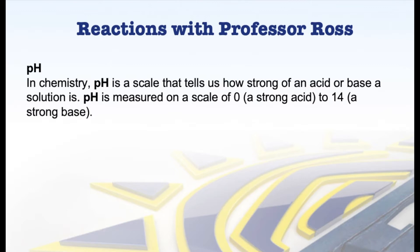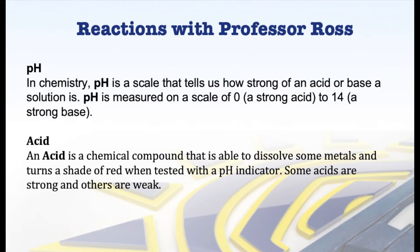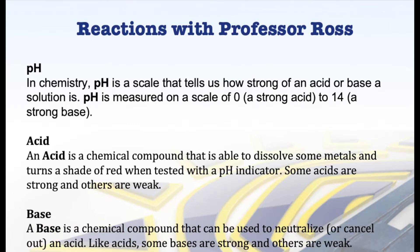pH is measured on a scale of 0, a strong acid, to 14, a strong base. An acid is a chemical compound that's able to dissolve some metals and turns a shade of red when tested with a pH indicator. Some acids are strong and others are weak. A base is a chemical compound that can be used to neutralize or cancel out an acid. Like acids, some bases are strong and others are weak.